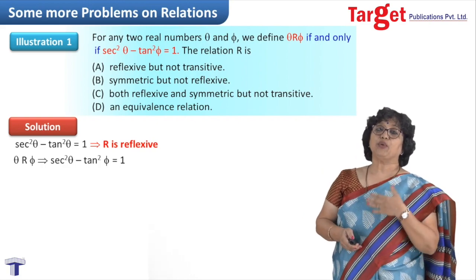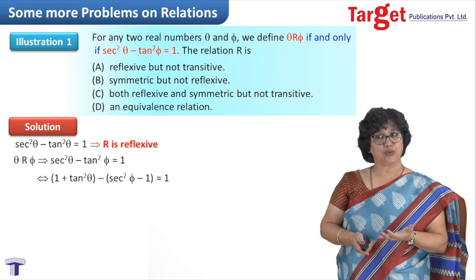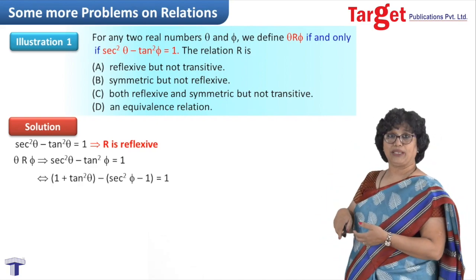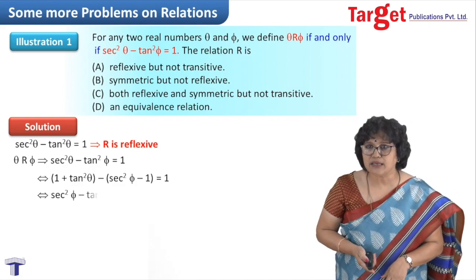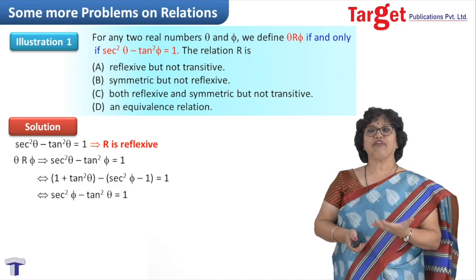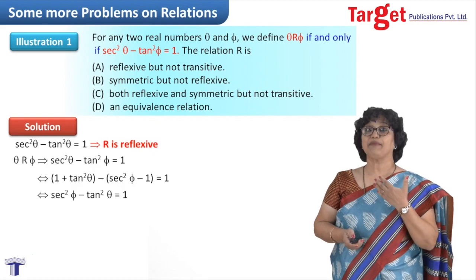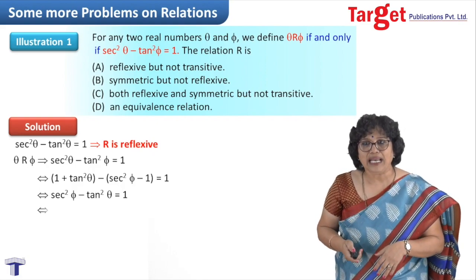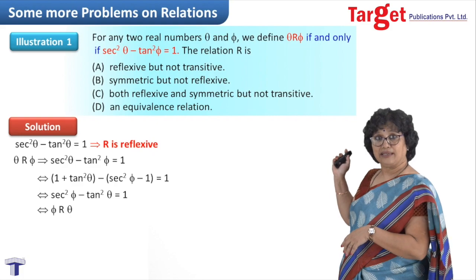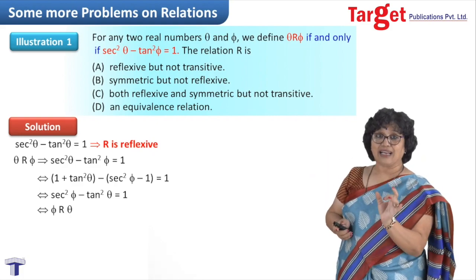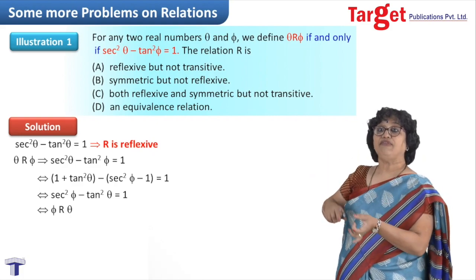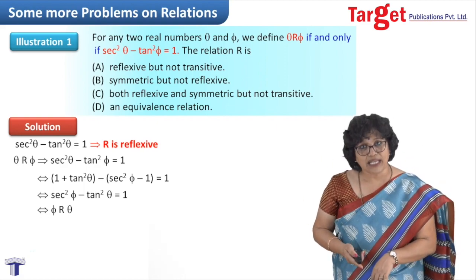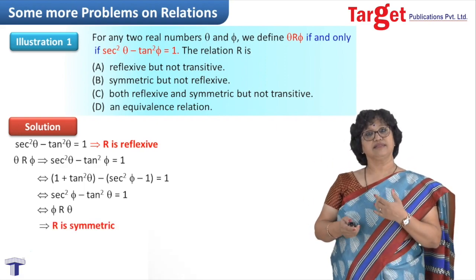We replace sec² theta with 1 + tan² theta and write tan² phi as sec² phi minus 1, using standard trigonometric identities, and simplify. This leads to sec² phi minus tan² theta equals 1, which is exactly the desired equation. This means phi is related to theta. So, starting from theta related to phi, we arrived at phi related to theta — the relation is symmetric.